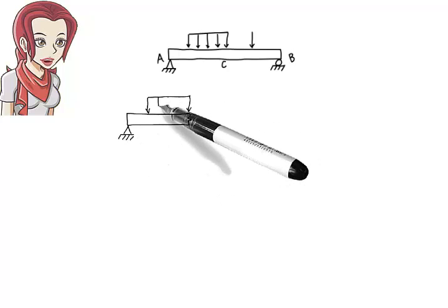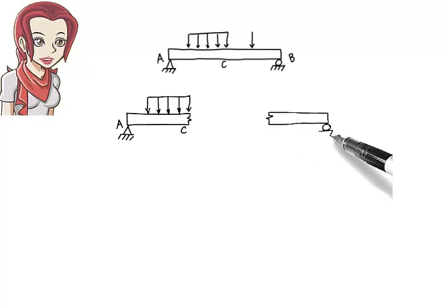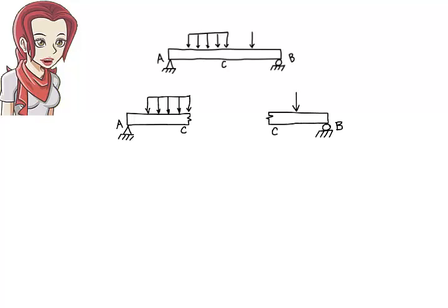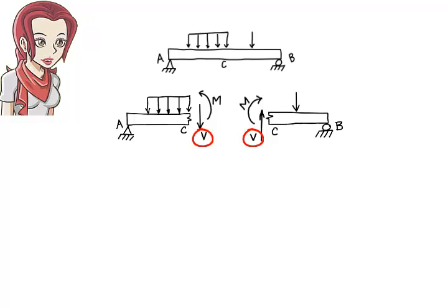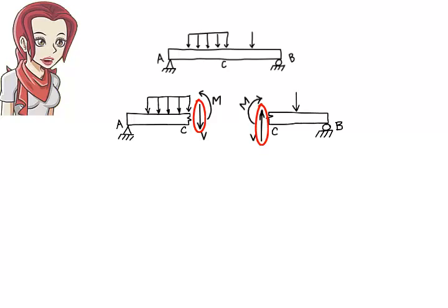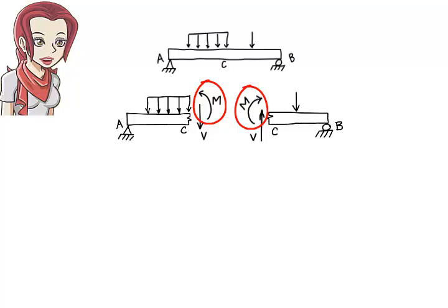So if we cut this beam at its midpoint, point C, we end up with two beam segments: the left segment and the right segment. Note that at C, the shear force in the left segment has the same magnitude as the shear force in the right segment. We use the same variable V to denote the magnitude of both force vectors. However, they do have opposing directions — one is drawn upward, the other downward. This is necessary as the algebraic sum of the two vectors must be zero. The same is true for the bending moment at C. The moment in the left segment is drawn counterclockwise, whereas for the right segment the moment is drawn clockwise. Since they both have the same magnitude, their algebraic sum is zero.